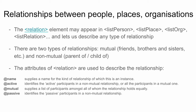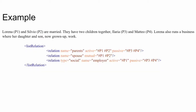Let's see a short example. We have two people, Lorena and Silvio. Lorena has the attribute P1 and Silvio has the attribute P2. Lorena and Silvio are married and have two children together — Hilaria (P3) and Mateo (P4). Lorena is also a business owner who runs this business with her daughter and her son, who are grown-up kids.